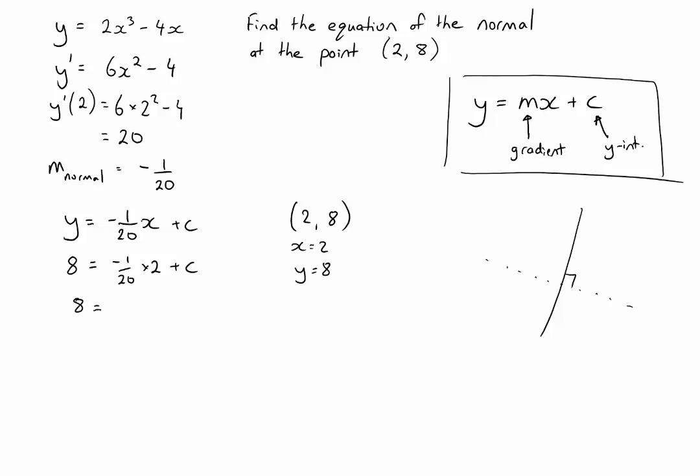Now 2/20ths is actually 1/10th. So negative 1/10th plus c. If we add 1/10th to both sides, c equals 8 and 1/10th, or 81/10ths.